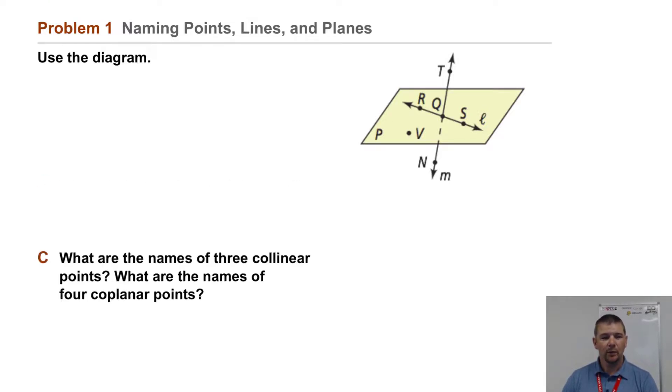Part C: what are the names of three collinear points? What are the names of four coplanar points? Well, considering the diagram we can see that points R, Q, and S are collinear; note they're all in line L. We can also see that points R, Q, S, and V are coplanar, all being in plane P.